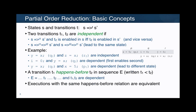With this dependency relation, we build the happens-before relation. Basically, in a sequence of statements, if we have two transitions and one goes before the other and they are dependent, then we say we have a happens-before relation. This is a partial order relation — that's why these are called partial order reduction techniques. The theory says that executions with the same happens-before relation are equivalent. The challenge of these techniques has been to find ways of computing this on the fly and effectively.